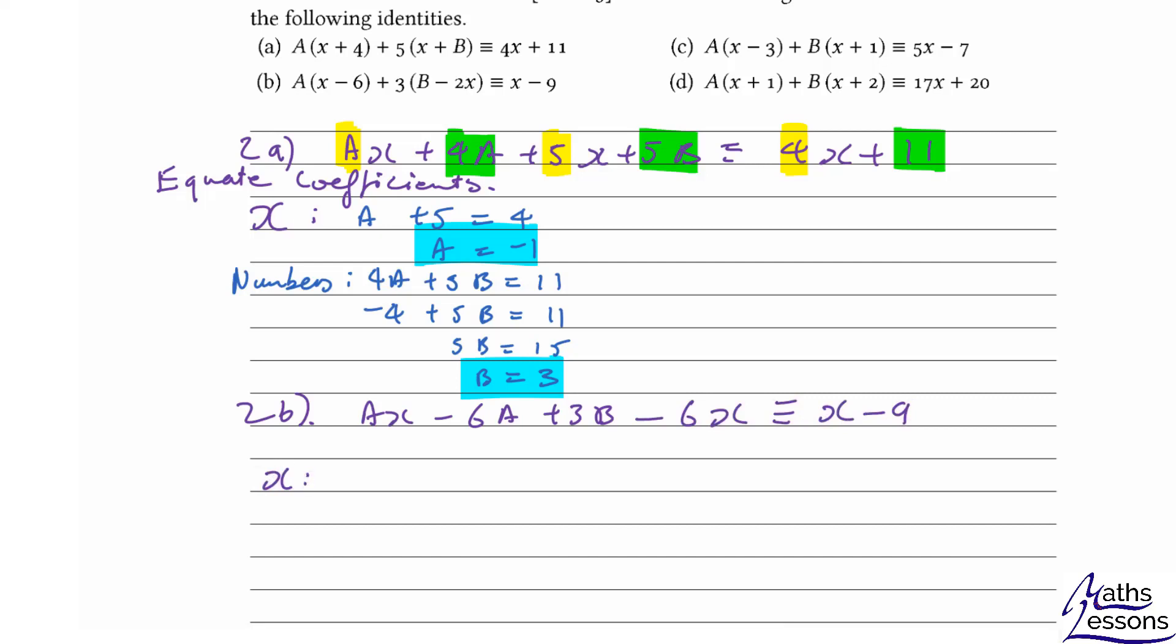Again we'll start off with the x's. We look at all the x's and we see you've got a lots minus 6 lots and that is just one lot there. So a minus 6 equals 1, so a equals 7.